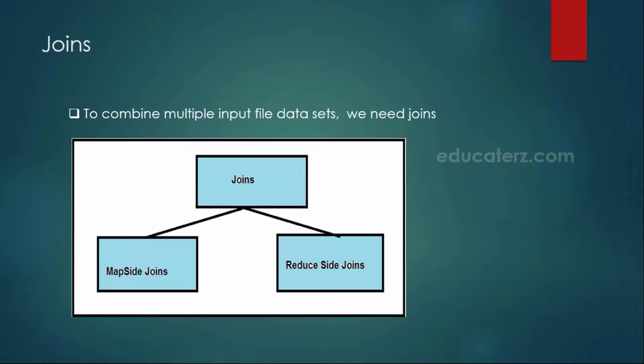Joins — it's not only in MapReduce; even in RDBMS we have joins. The concept is the same. Suppose if you wanted to join or combine and process multiple data sets, multiple input files, we are going to use the concept of joins. In terms of MapReduce, we have two types of joins: one is a map-side join and the other is a reducer-side join.